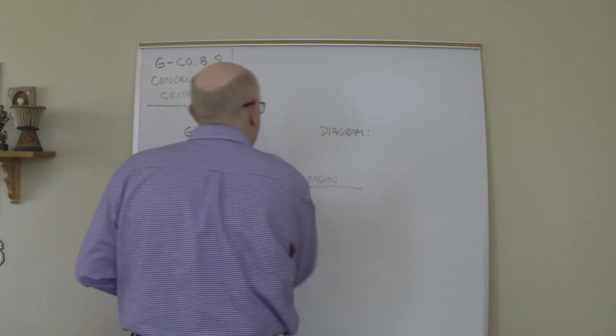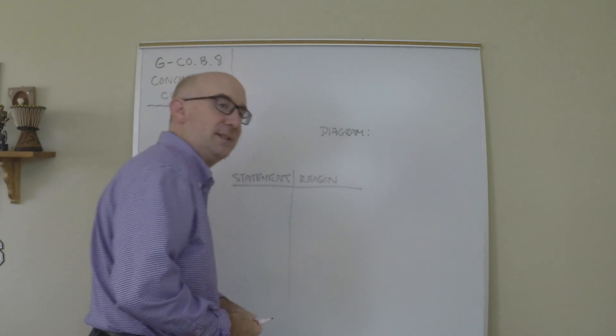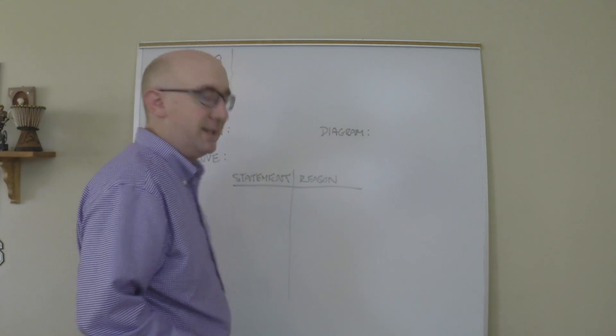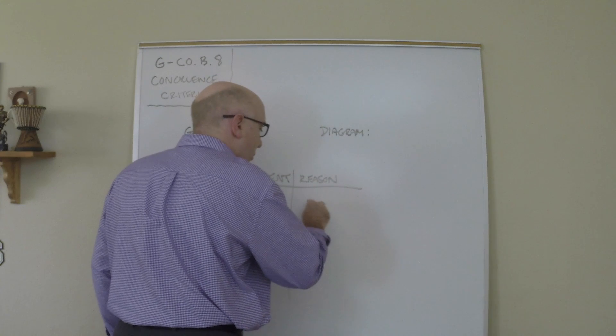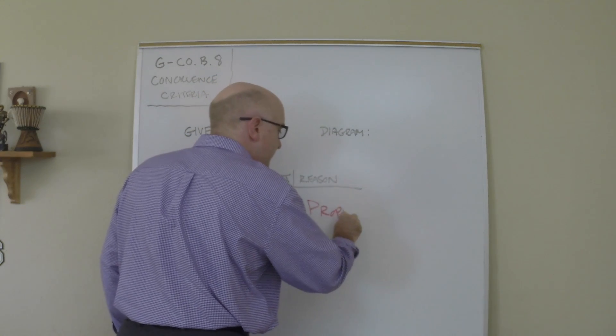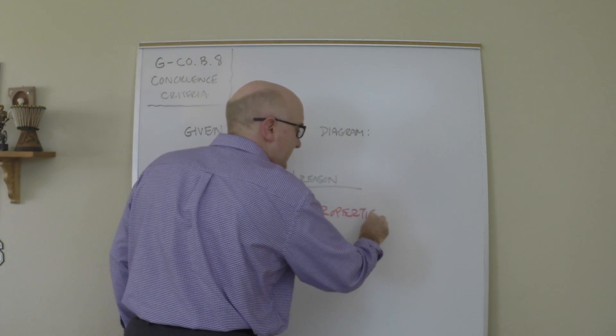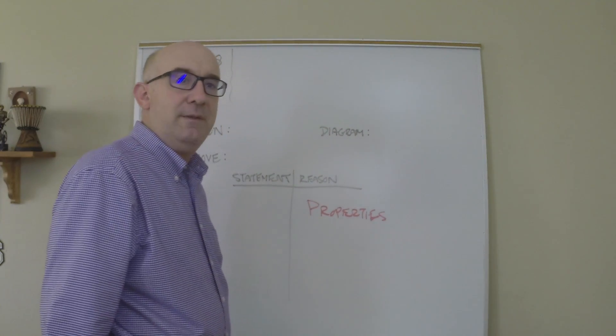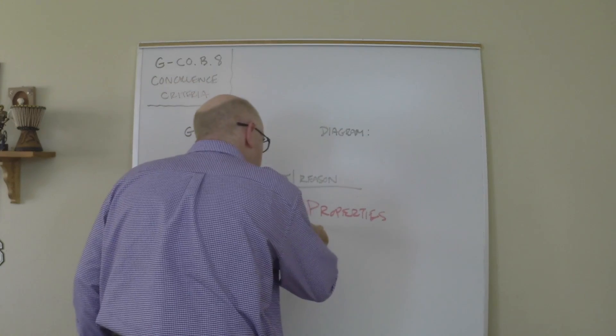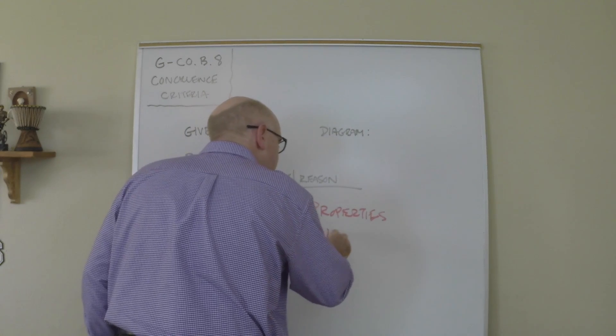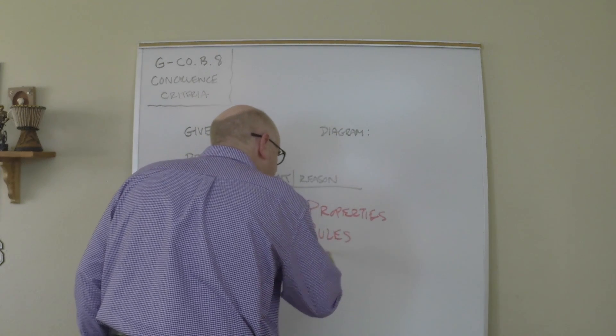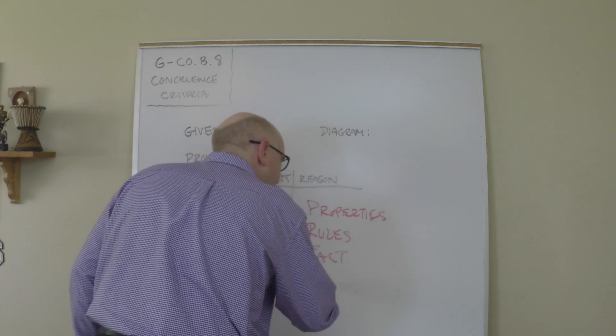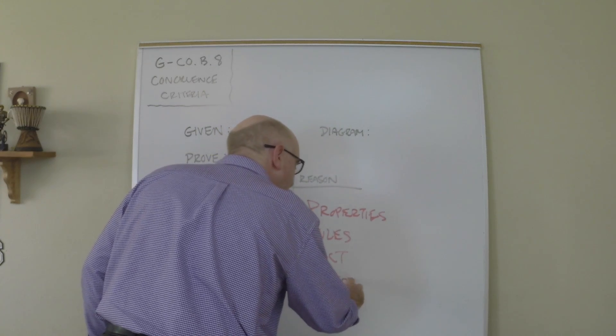Now the reason side of things, it's easy to make statements. It's harder to make reasons. Over here you're going to use properties to help you out, like properties of translations, or you're going to use properties of certain angles or relationships. You're going to use rules, facts, theorems that have been proven to be true already.